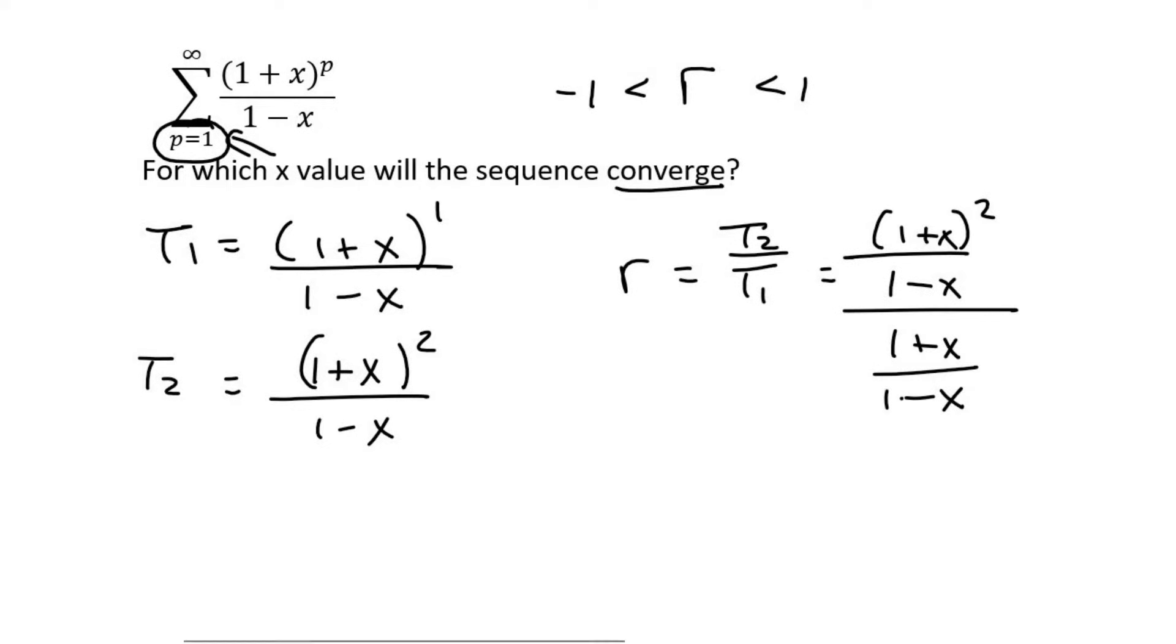Now whenever we have a fraction on top of a fraction, then we need to use a trick that we probably learned in earlier grades. Like if you have 3 over 4 divided by 2 over 9, then you can say 3 over 4 times 9 over 2. So we're going to do the same approach.